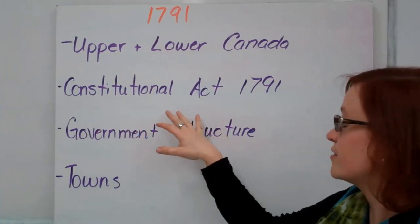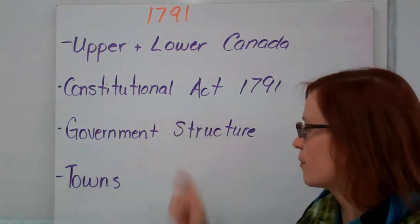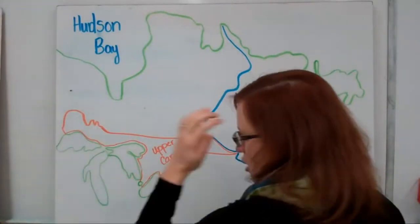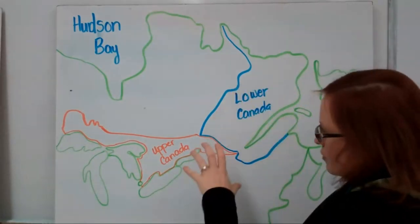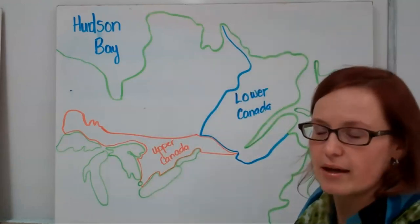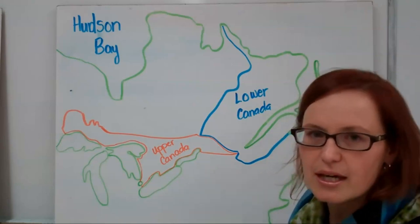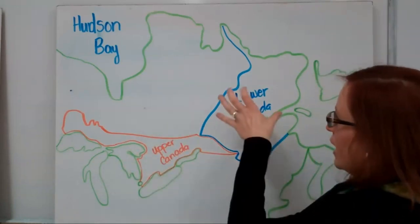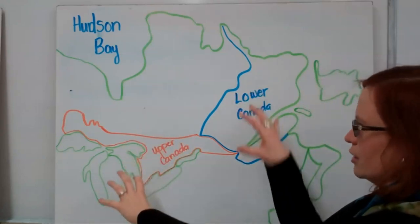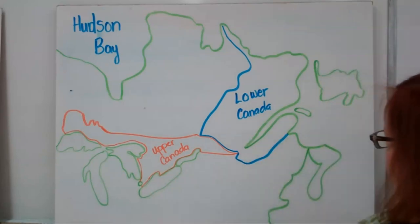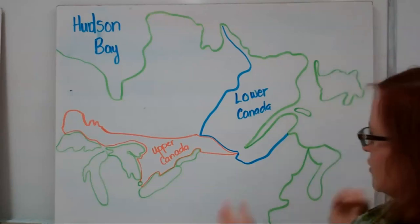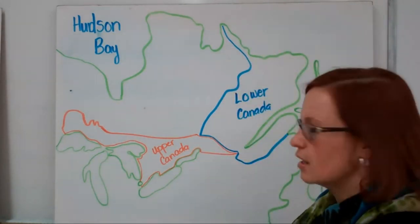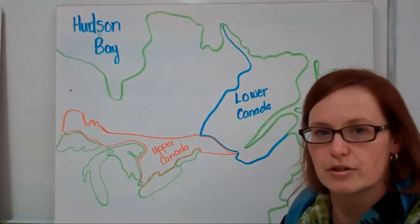The Constitutional Act of 1791 established the government structure for Canada. After the American Revolution, when the Loyalists came up to Canada, they had to settle to the west of the area known as Quebec, and there was some unrest — they were not happy. So they decided to establish two separate areas: Upper Canada and Lower Canada. Upper Canada was predominantly English-speaking — the new Loyalists who arrived after the American Revolution — while Lower Canada was predominantly French-speaking.